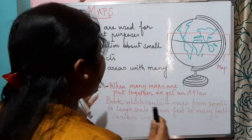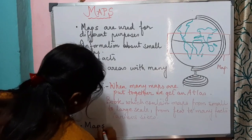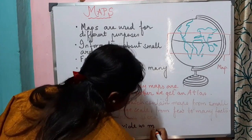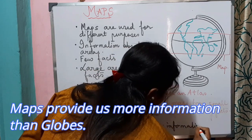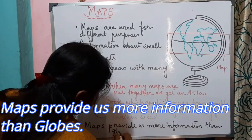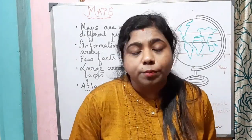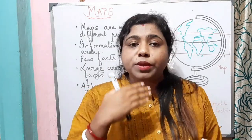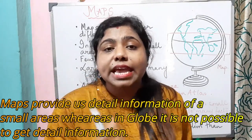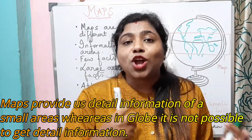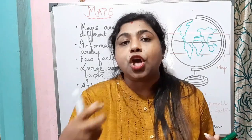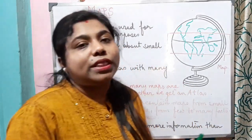Maps provide us more information than a globe. When do we need a globe? We need a globe to study the earth's surface as a whole. But when we need to study a part of the earth — the continents, countries, states, districts, cities, or towns — we need a map. Maps provide detailed information about smaller areas, which is not possible with a globe.